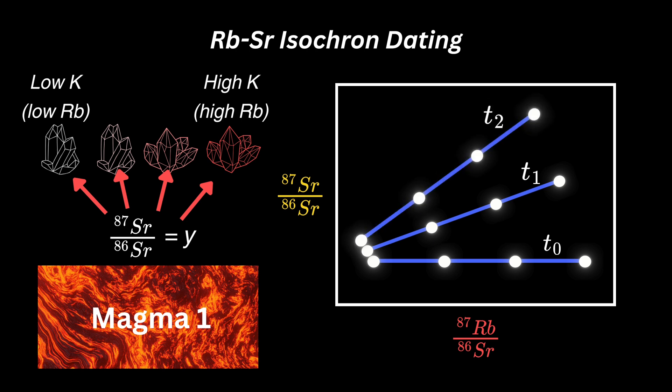This behavior increases the slope on a graph of 87 strontium versus 87 rubidium when normalized to the stable isotope of strontium. Therefore, the slope corresponds to the time elapsed since this suite of minerals last cooled below 650 degrees Celsius, known as the closure temperature. The advantage of this isochron method is that we don't need to assume the initial concentration of daughter product. Sounds good, right?